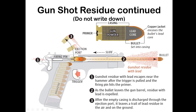This image shows the firing pin, the ejection port, and all the things going on during firing. You can see gunpowder residue coming out of this cartridge — it's going to be coming out the back and most obviously out the front.